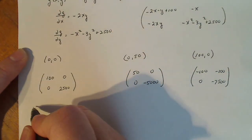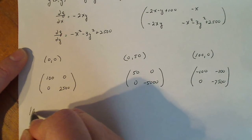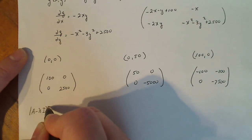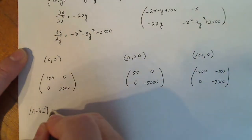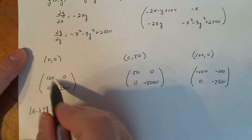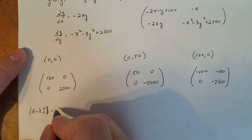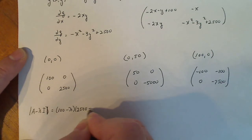Now, for each one, I'm going to calculate the determinant of A minus lambda I because that is my characteristic polynomial. So I'm going to put a minus lambda minus lambda. So this is going to turn out to 100 minus lambda times 2,500 minus lambda minus 0. And that is supposed to equal 0.